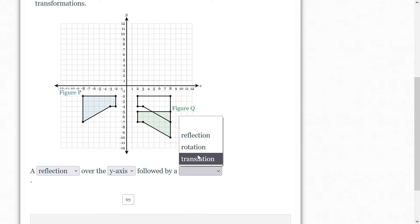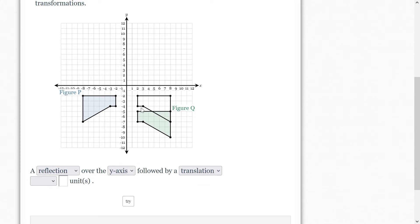And then we'll do a translation. And then it looks like we're going down, looks like down three units. Now actually, in this one, I could have done my translation first if I wanted to. I could have done my translation down and then my reflection, and that would have been just fine. So there's my reflection and then my translation.